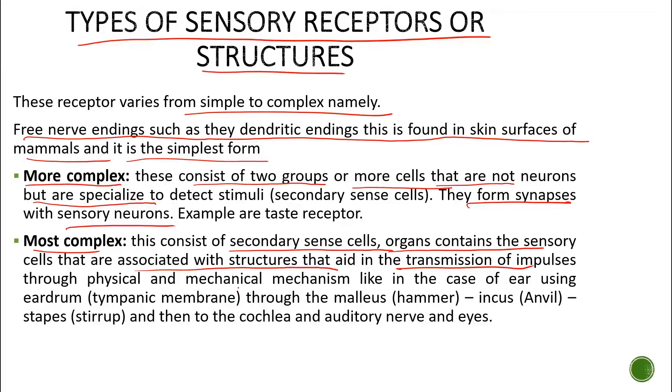Impulses need to be transmitted. In the case of the ear, a physical and mechanical mechanism is used: the tympanic membrane transmits through the malleus, the incus and stapes, and then to the cochlea and auditory nerves.